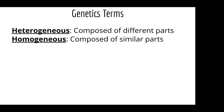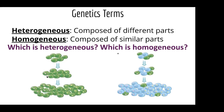Two genetics terms we use most often: heterogeneous means composed of different parts, and homogeneous means composed of the same or similar parts. Looking at a picture: the one on the left — all the same color — would be homogeneous. The one on the right has two different colors, so it's heterogeneous.